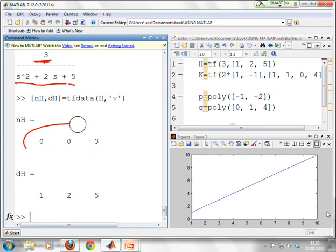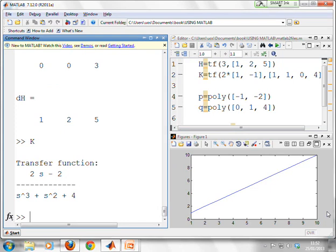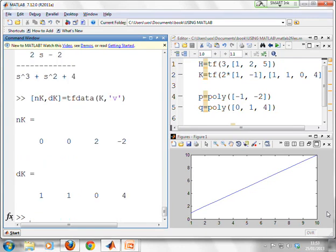Now we can do one other example just to demonstrate that this is working. So if we remind you what k was, there was k, 2s minus 2 over s^3 plus s^2 plus 4. So now we go numerator of k, denominator of k in square brackets equals tfdata, and then we'll have k, dash v. And what you notice, the numerator coefficient 2 minus 2, as expected, the denominator coefficient is 1, 1, 0, 4, as expected.